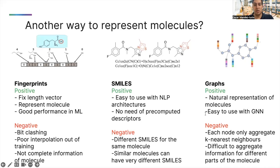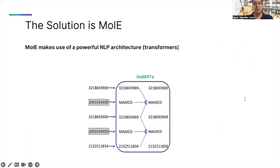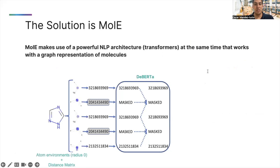We designed Mole trying to keep the benefits of each molecular representation, at the same time that we try to overcome some of the issues that I mentioned before. Mole makes use of a powerful architecture such as DeBERTa, which uses disentangled attention. It uses a molecular graph as input in the form of atom environments of radius zero and the distance matrix. Atom environments of radius zero has information of the atom type and all bonds attached to it, but without the information of neighboring atoms. They are hashed into a unique identifier, which is used as input for the transformer.